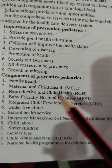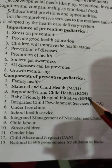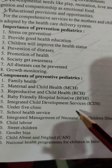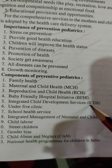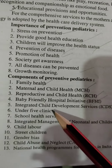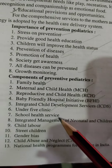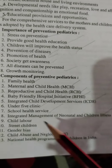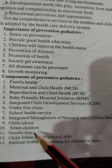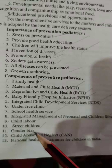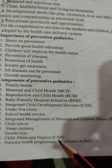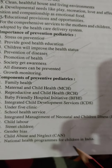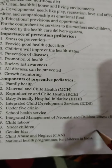Further components include: family health, maternal child health, reproductive and child health, baby-friendly hospital initiative, integrated child development service, under-five clinics, school health service, integrated management of neonatal and child illness, child delivery, street children, gender bias, child abuse and neglect, and national health programs for children in India.